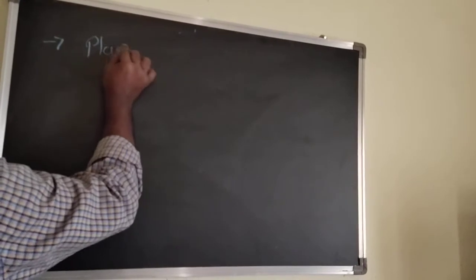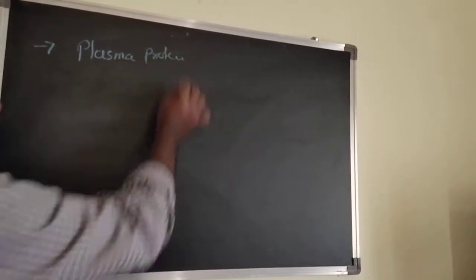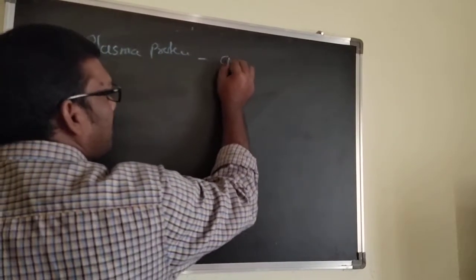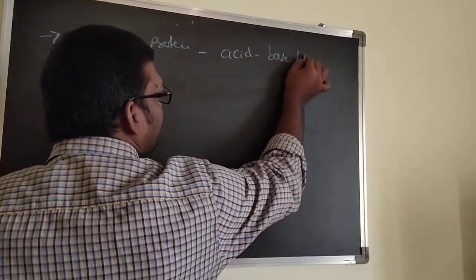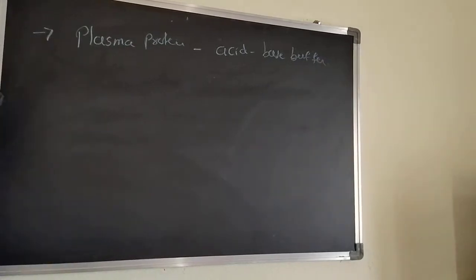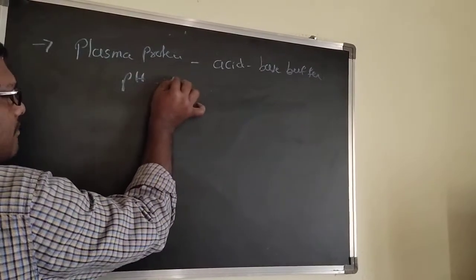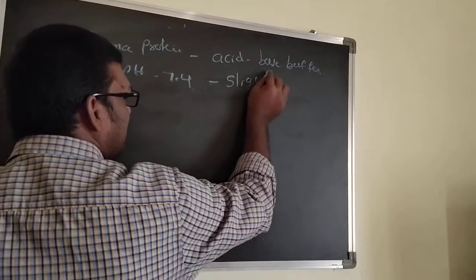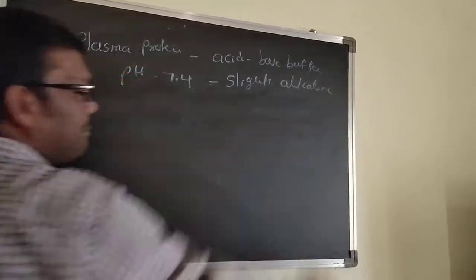Plasma proteins — albumins, globulins, fibrinogen, and prothrombin — act as an acid-base buffer. They can maintain the pH. The pH of blood is 7.4, which is a slightly alkaline, or basic, nature.